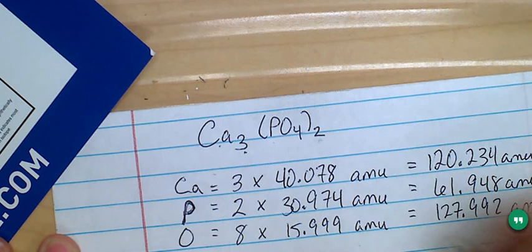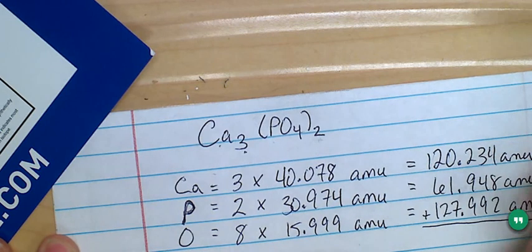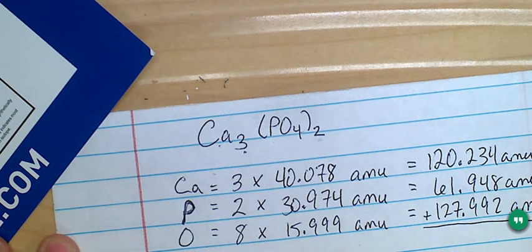And to get the formula mass, I just add up the total mass of each element's mass.